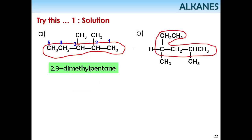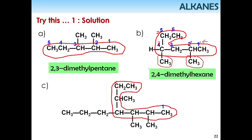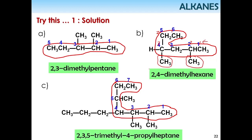For the next example, find the longest chain — counting 1, 2, 3, 4, 5 carbons. Number from the end that gives the lowest locant: the first substituent is found at carbon 2, so we go with that numbering giving 1, 2, 3, 4, 5. The full name for this compound is 2,3,5-trimethyl with the propyl substituent at carbon 4 — giving 4-propylheptane with three methyl groups as trimethyl.